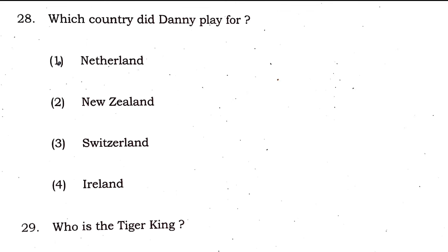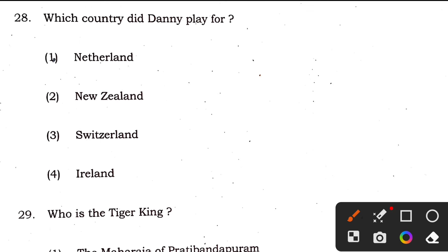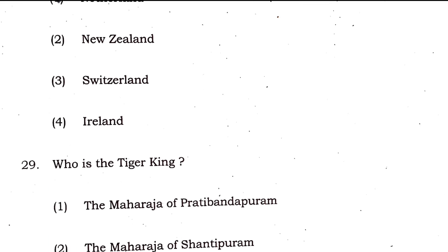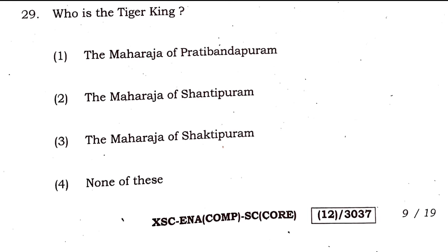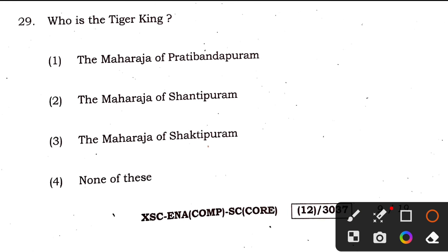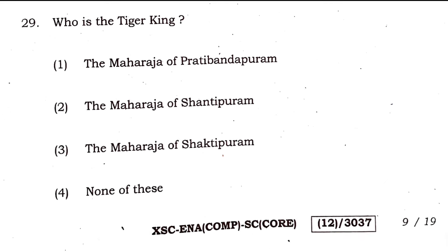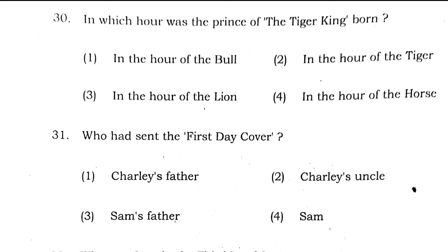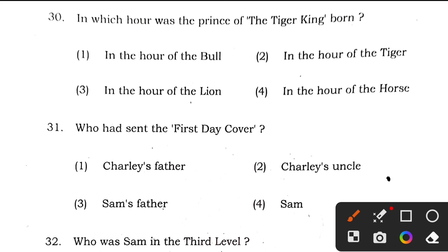Question 28: which country did Danny play for? This question also appeared in the Arts paper. The right answer is option 4. Question 29: who is the Tiger King? Very easy answer — the Maharaja of Pratibandapuram. Question 30: in which hour was the prince Tiger King born? He was born in the hour of the bull, and tigers are the enemy of the bull, so the right answer is option 1, in the hour of the bull.